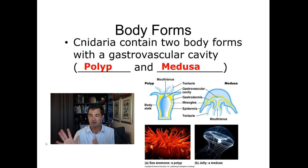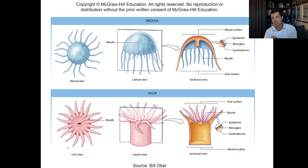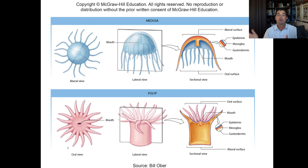Cnidarians come in two very distinct body forms: one is called a polyp and the other is called a medusa. For example, if you had a football team with a player who was 320 pounds and really big, you might say that's a lineman. Then if you had somebody short but incredibly fast, weighing maybe 190 or 200 pounds, that might be a running back. That's how you can think about these two body forms.